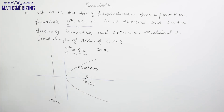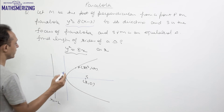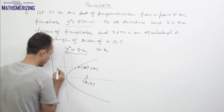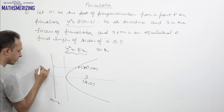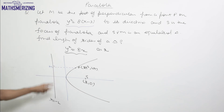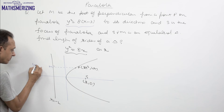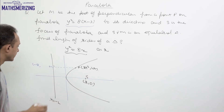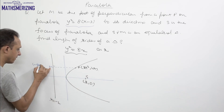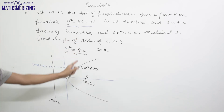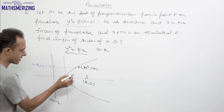The directrix is at x = −2. Let M be the foot of perpendicular from point P to the directrix, so the coordinates of M are (−2, 4t). It is given that triangle SPM is equilateral.